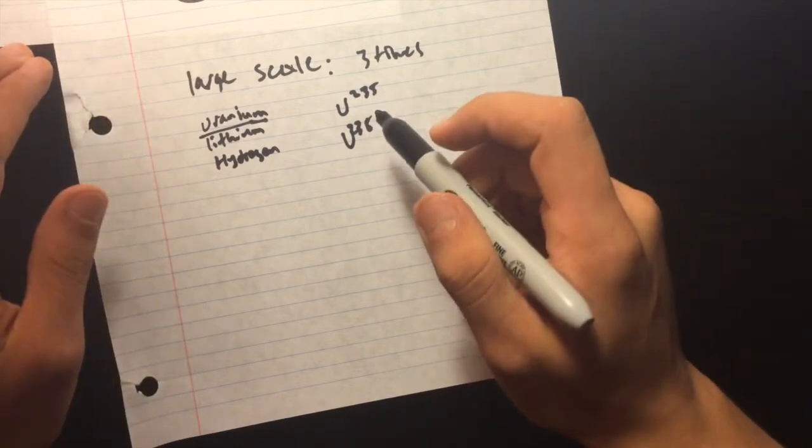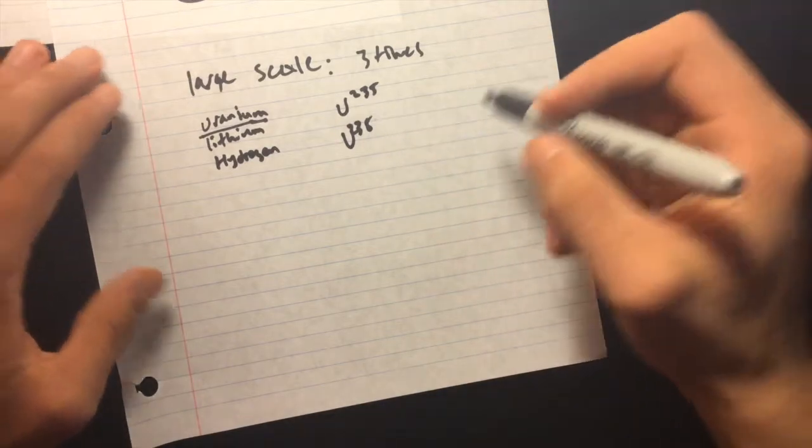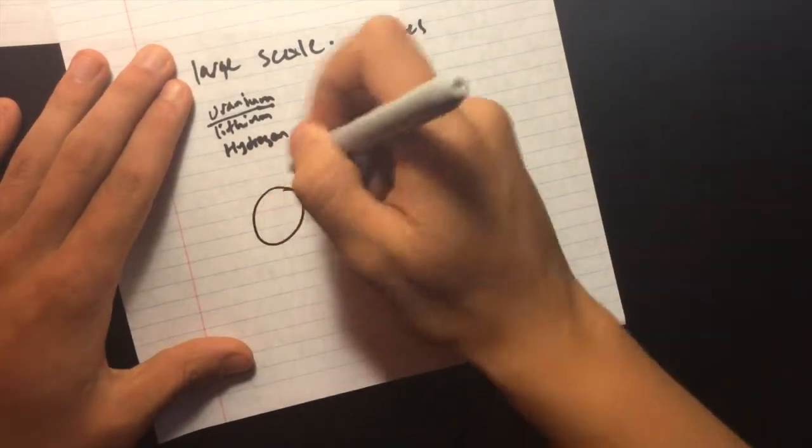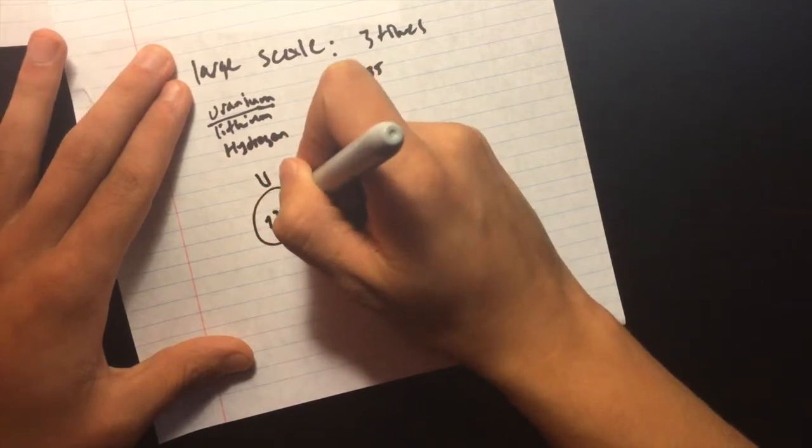In this case, its physical properties, so that you can separate the two isotopes a lot easier. So, this is uranium, this is 238, this is 235.